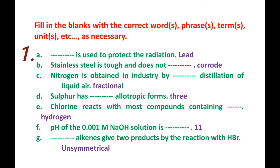Number C. Nitrogen is obtained in industry by the fractional distillation of liquid air. Nitrogen is obtained in industry by fractional distillation of liquid air.